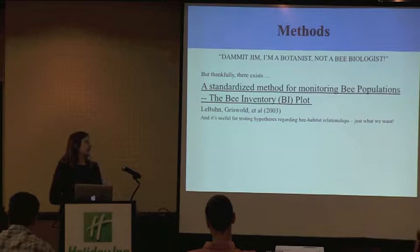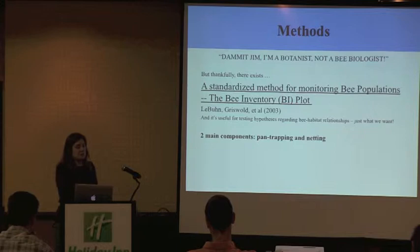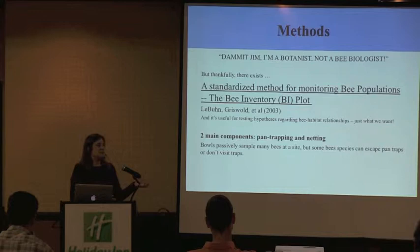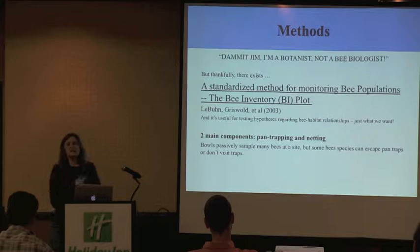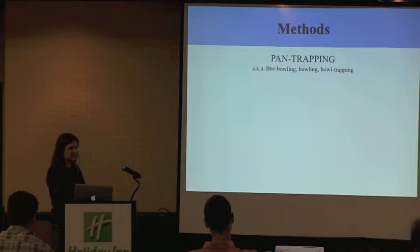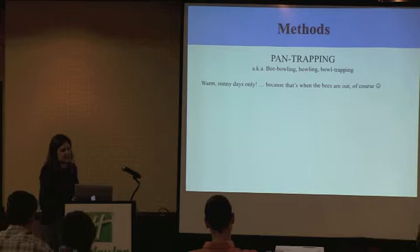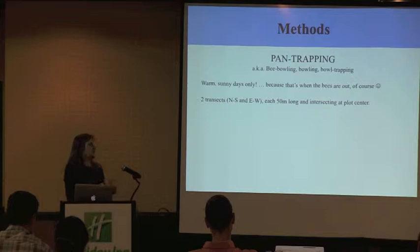The two main components of the protocol are pan trapping and netting. We have bowls that passively sample bees at a site, but some bee species can escape pan traps or simply don't visit them, so netting samples from bees that aren't captured by bowls. For pan trapping, warm sunny days only — that's not a fieldwork cop-out, it's just when the bees are out. I lay out two transects at the beginning of the season running north-south and east-west, 50 meters long, intersecting at plot center.